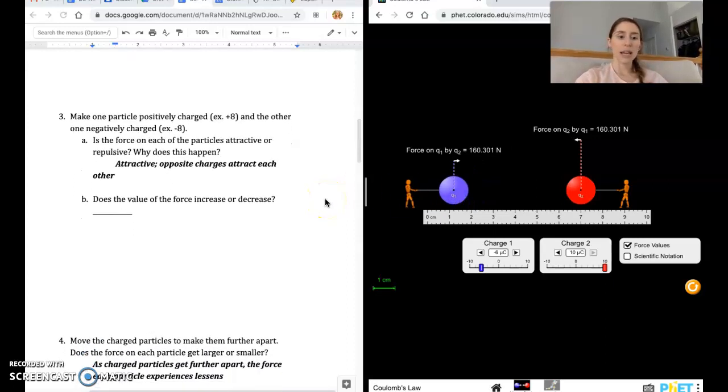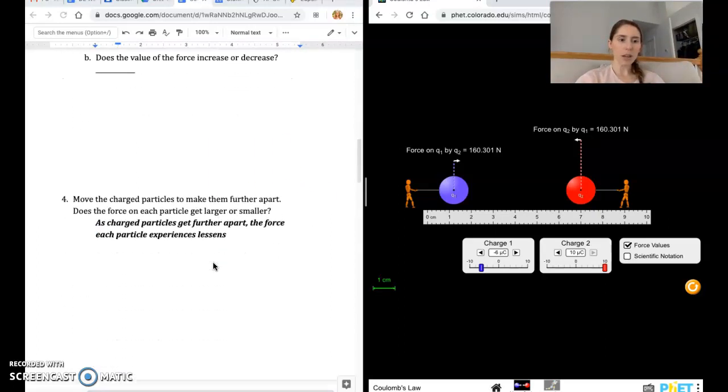That means that our force is getting less and less and less. The force on each one. So now think about our magnets. Say we've got the north end of a magnet, the south end. I have to get them a certain distance to each other before they attract. The further and further I take them away from each other, the less of that attractive pull I feel. Same thing happens with charged particles.